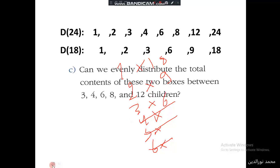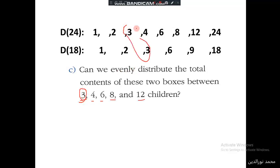Part C: Can we evenly distribute the total contents of these two boxes between 3, 4, 6, 8, or 12 children? We have to find a common divisor of 24 and 18. Can we distribute them among 3 evenly? Yes, 3 is a common divisor. We can distribute evenly among 3 children.